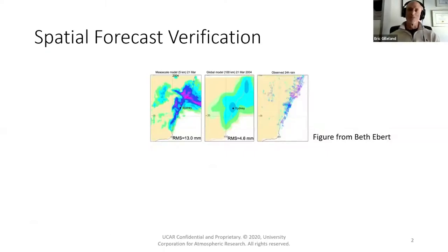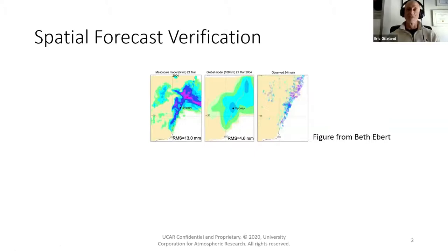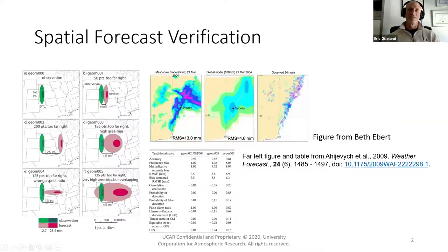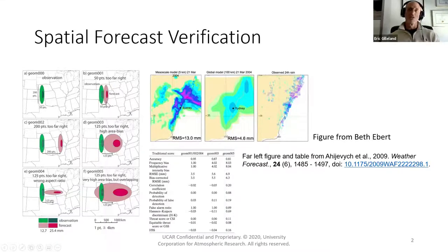I won't go into a whole lot of background on why we do spatial verification, because I think most of you are familiar with that. But basically, you've got these higher resolution models, and it's really hard to beat the coarse resolution models with the traditional methods. For example, if your forecast is perfect, you get penalized once for all these misses, but then you get penalized again for all these false alarms. So there's the double penalty, and then there are other issues as well.